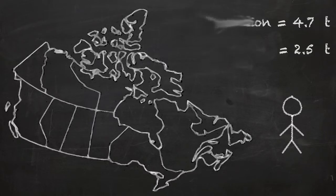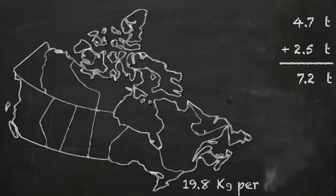When you add these together, this is 7.2 tons of carbon dioxide for the year, which works out to be almost 20 kilograms per capita per day.